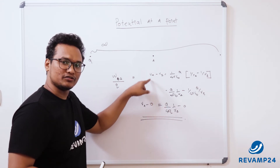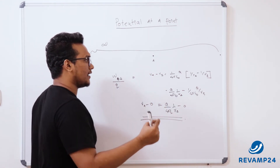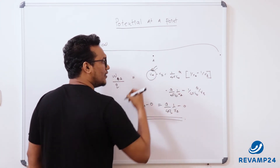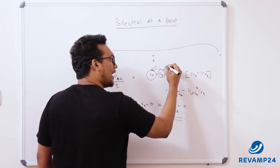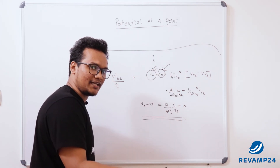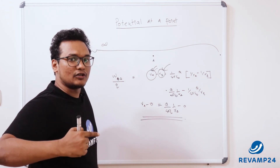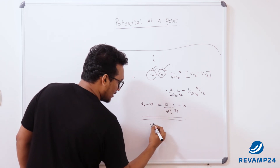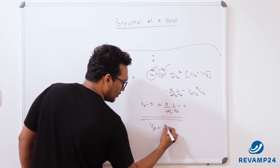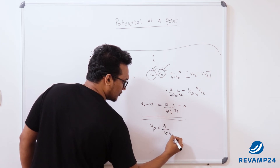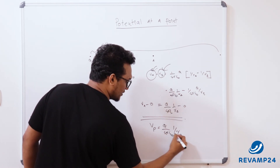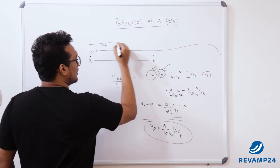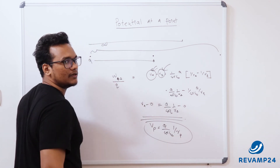Here we use the same equation we found for potential difference, but one point is where we are finding the potential and the other is at infinity. From infinity, we bring to a point, and the work done for a unit charge is nothing but the potential at that point. So the equation is: potential at a point equals q over 4πε₀ times 1/r, where r is the distance to that position. For example, if r is 5 meters, then r is 5; if r is 10 meters, then r is 10.